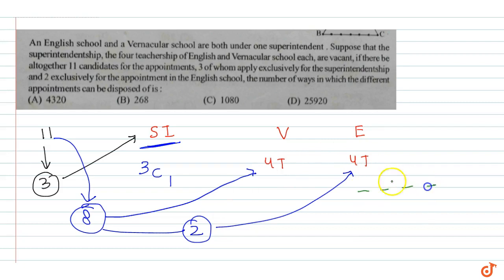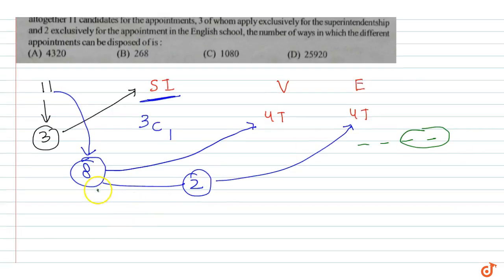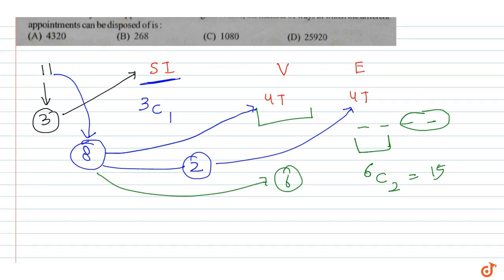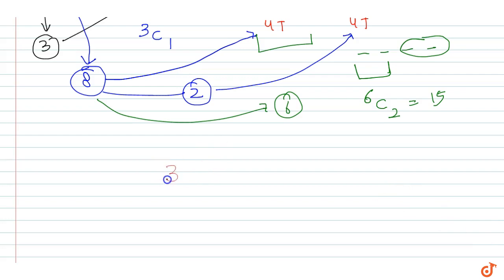We have two positions already reserved for the English school. Now we have a total of 6 persons, because from the 8 we subtract the 2 already reserved, giving 6. From these 6, we choose 2 for the English school positions: C(6,2) equals 15 ways. That automatically leaves four persons for the vernacular school selection. So total ways for superintendent and teacher selection: 3 × C(6,2) equals 3 × 15.